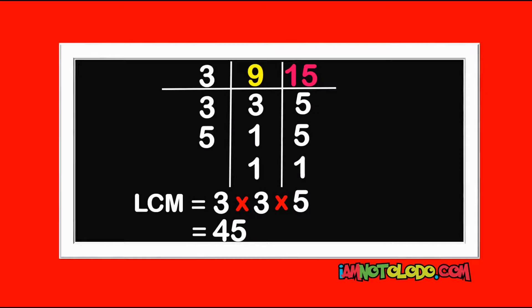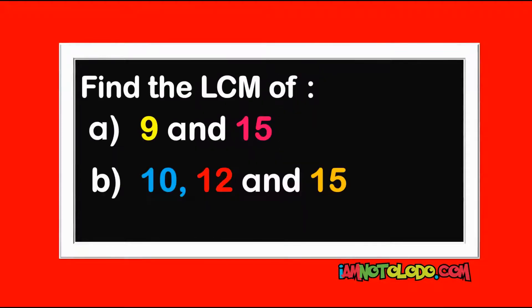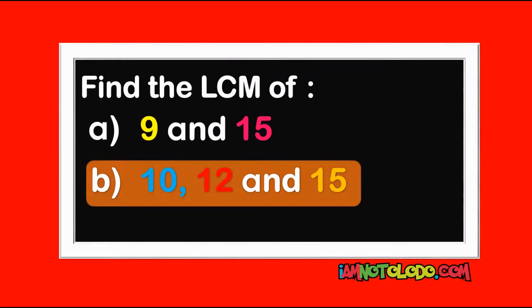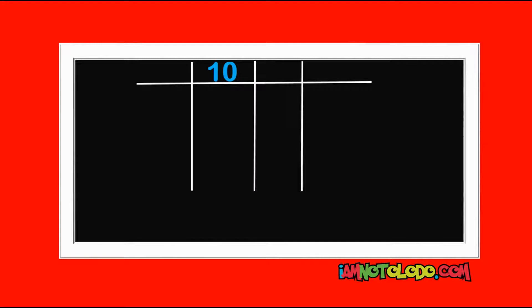Let's solve the second question. Write down 10, 12, and 15. 2 can divide 10 and 2 can divide 12, so we can start with 2. 2 in 10 is 5, 2 in 12 is 6. 2 cannot go into 15, so write down your 15.